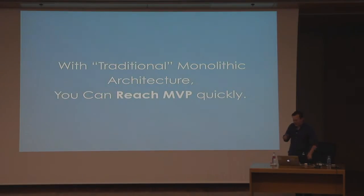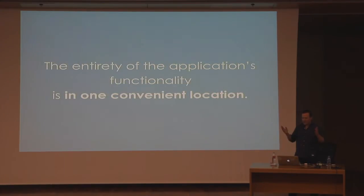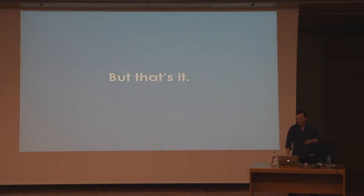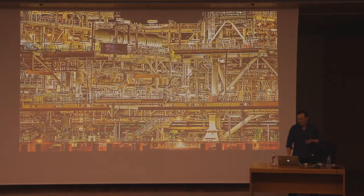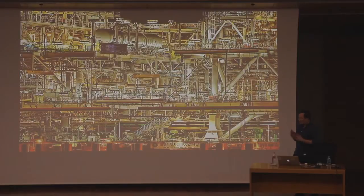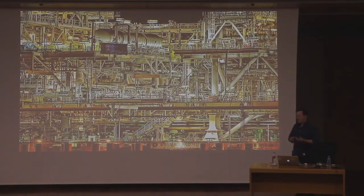With traditional monolithic architecture, you can build out your application very quickly, reach delivery, and have your application out in the world fast. The entirety of your application's functionality is in one convenient location. But as your application grows, the complexity will soon become enormous. Trying to figure out where things are and how they work — which seemed so easy in the beginning — over time becomes very difficult to manage, particularly once you start to attract users and grow your team.